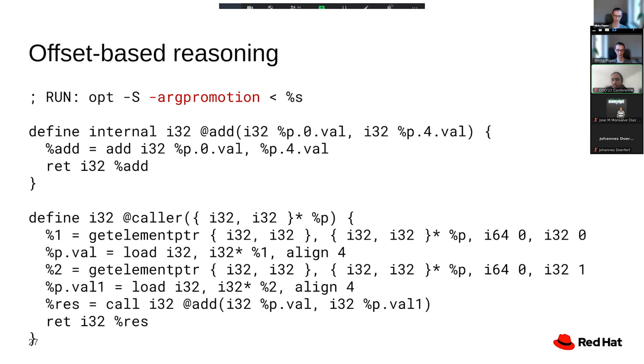But for the purpose of illustration, let's keep with a simple example. What I actually want to show is how this optimization and how many other optimizations in LLVM used to be implemented, which is by looking at get element pointer indexes. We would say that we have one load at index 0, 0, and another load at index 0, 1. And then we can, for example, replace index 0, 0 with one argument and index 0, 1 with the other argument.